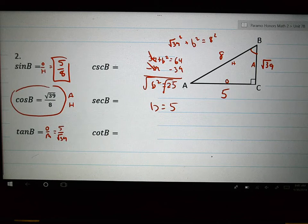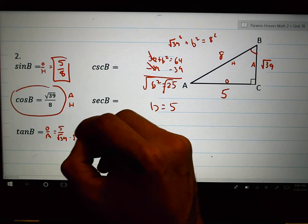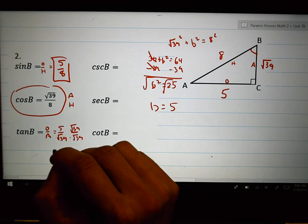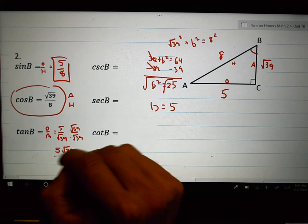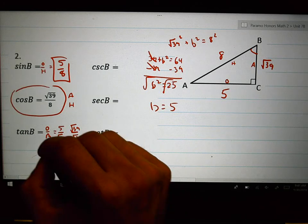Rationalize does not mean turn it into a decimal, by the way. So, some of you on your test, you lost a point because you turned things into decimals and left decimals in your fractions, and that is not okay. We never leave decimals inside our fractions. We rationalize. What does that mean? Multiply by root 39 over root 39. Technically, we're multiplying by 1, which means the top is 5 root 39 over 39, which doesn't reduce. Here is your tangent of B.